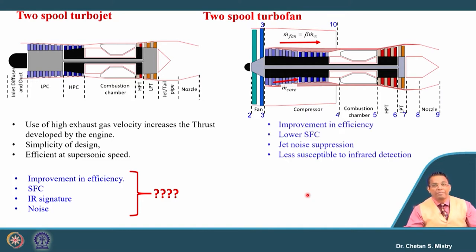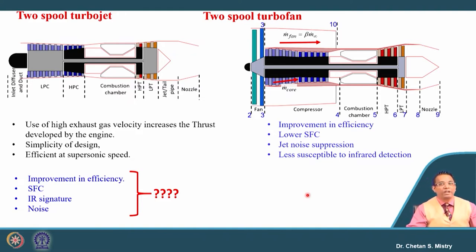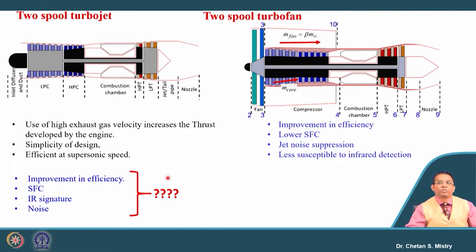For the two-spool turbofan engine, the benefits include improvement in efficiency, lower specific fuel consumption, jet noise separation, and being less susceptible to infrared detection. All the limitations we discussed for the turbojet engine are overcome by incorporating the turbofan engine.